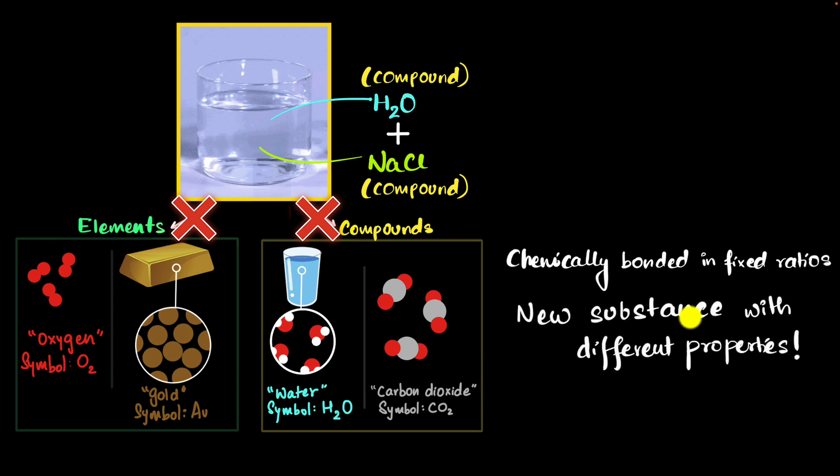Of course, salt is a compound because sodium and chlorine are chemically bonded in 1 is to 1 fixed ratio. And water is a compound, but salt water, that's not a compound at all. And more importantly, compounds are new substances with different properties altogether. When hydrogen and oxygen form a compound, you get water, which is a new substance. It has its own properties, its own taste, its own boiling point.